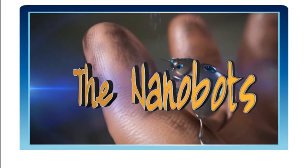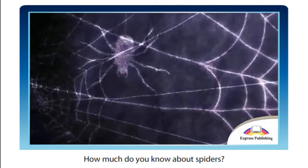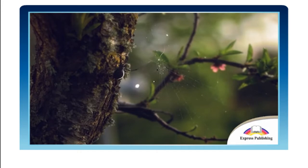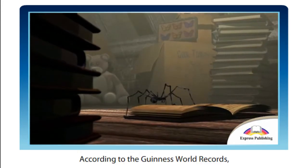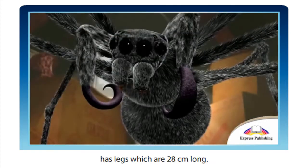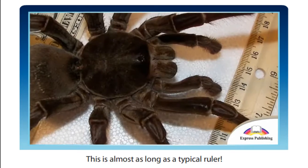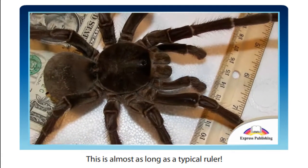The Nanobots. How much do you know about spiders? According to the Guinness World Records, the largest spider in the world has legs which are 28 cm long. This is almost as long as a typical ruler.